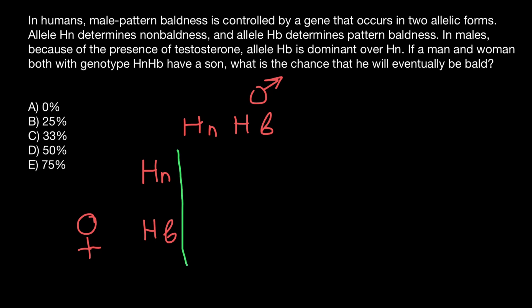And the female genotype would be here on the side, and her genotype is also HN and HB. Now let's build a simple Punnett square.